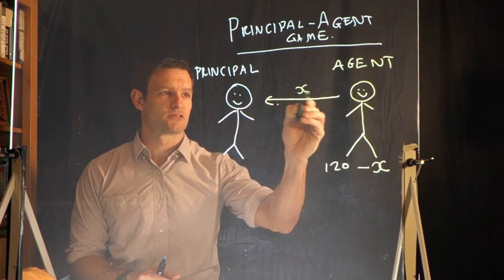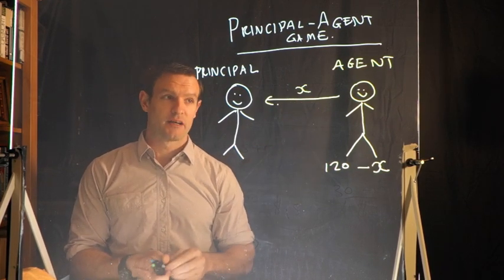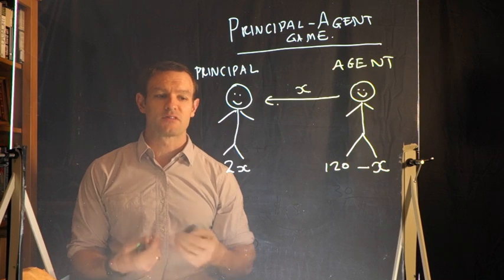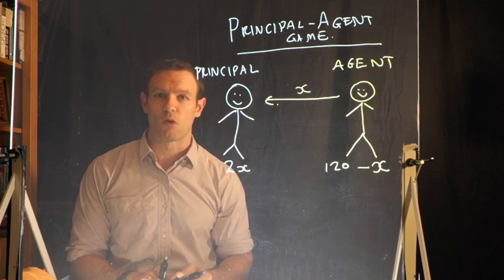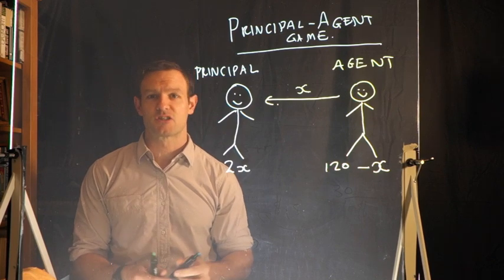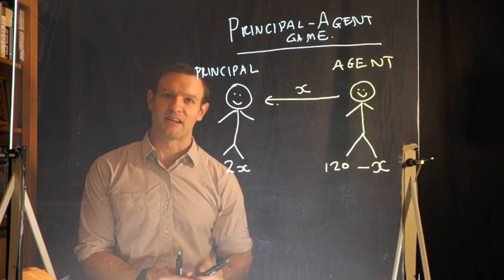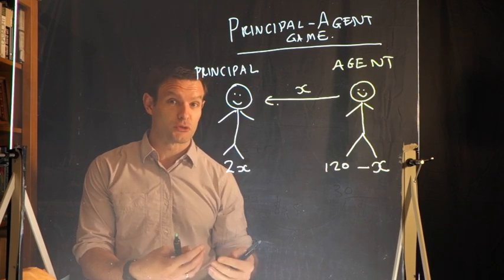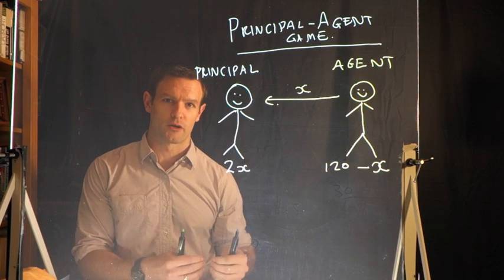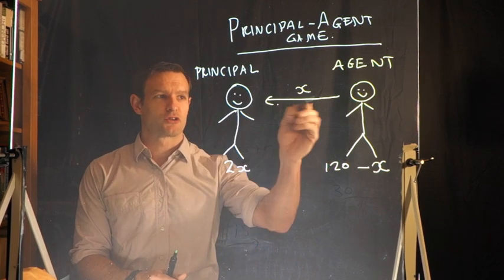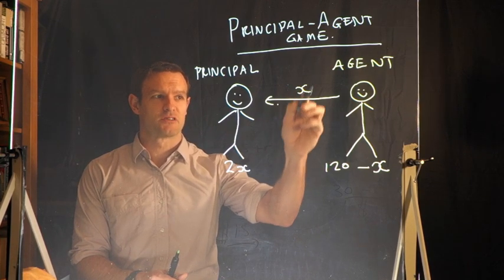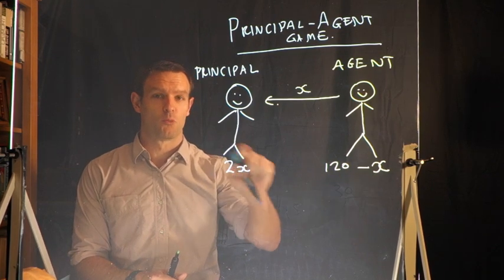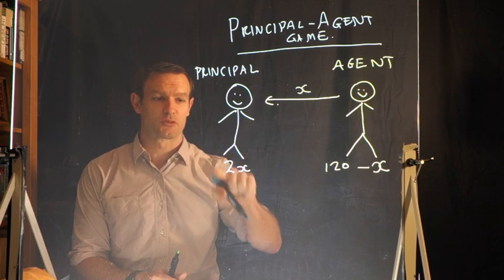So x goes from the agent to the principal, but crucially the principal receives 2x of those points. This captures the idea of what happens in a working relationship: if you have an owner and a worker, the worker engages in productive activity, but the product of what they produce is more valuable than just the work they do alone. So the transfer captures the effort exerted by the agent — costly to them — and the principal receives 2x.